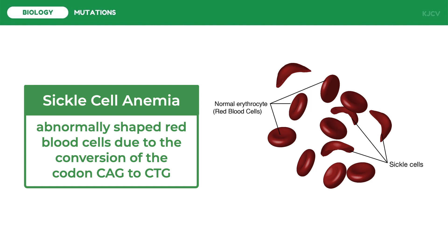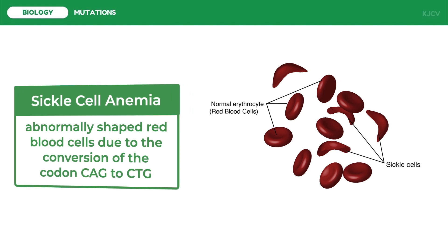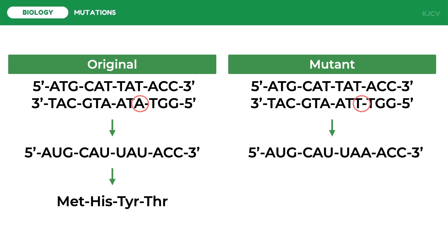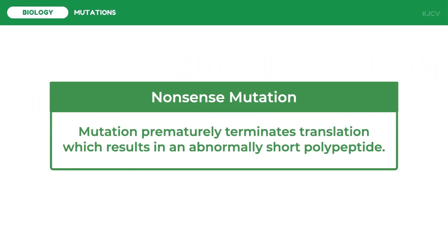Now let us discuss the third effect of a point mutation. Using the same DNA strand, we look at a mutation in which the last adenine of the third codon of the 3' to 5' strand undergoes transversion — specifically being replaced by thymine. The mutant mRNA strand differs from the original in the third codon: instead of UAU it has UAA. Since UAA is a stop codon, the polypeptide chain will be shorter than usual — translated only up to the second codon, producing methionine-histidine. This type of point mutation, which changes an amino acid codon into a stop codon, is called a nonsense mutation. It prematurely terminates translation, resulting in an abnormally short polypeptide, and nearly all nonsense mutations lead to non-functional proteins.